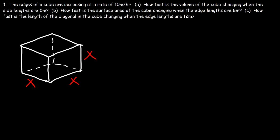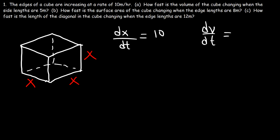Let's make a list of what we know in this problem. The edges of a cube — that is x — are increasing at a rate of 10 meters per hour, so dx/dt is 10 meters per hour. How fast is the volume of the cube changing? We're looking for dv/dt when the side lengths are 5, so when x is 5 meters.